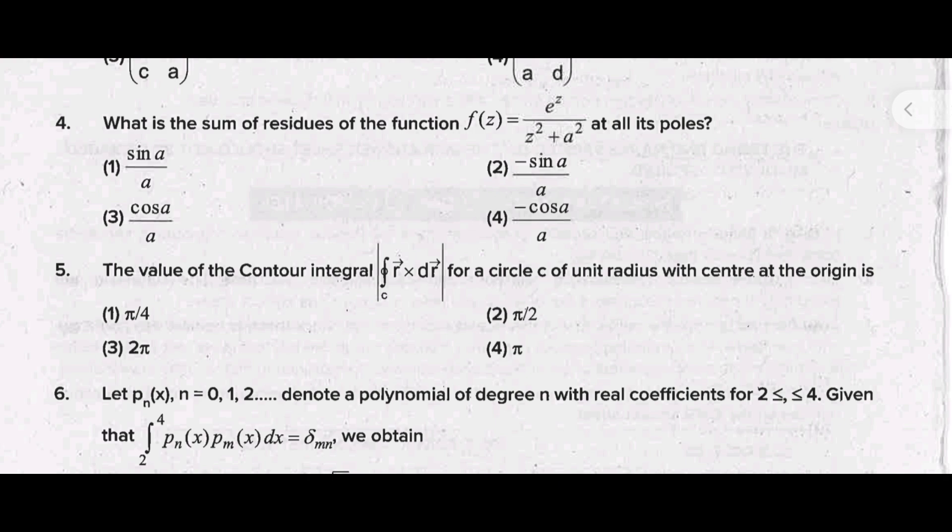Fourth question: what is the sum of residue of the function f(z) equal to e raised to z divided by z square plus a square at all its poles? The correct answer is option 1, answer is sin a by a.